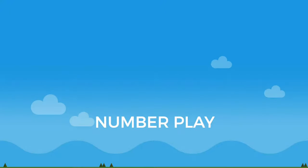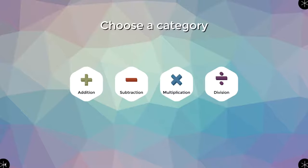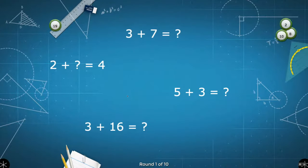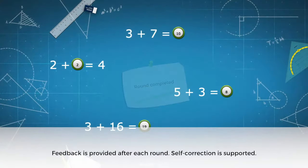NumberPlay is a group of apps that are good for reviewing math facts and developing math fluency skills. Tap the NumberPlay icon to open it. This will lead you to a selection screen where you can choose apps for addition, subtraction, multiplication, and division. Students drag numbered items to the correct spots to complete equations. There are 10 rounds for each of these apps. After a round is completed, feedback is provided.